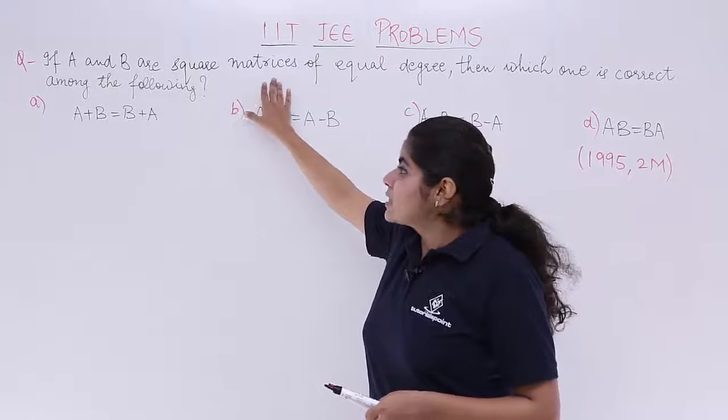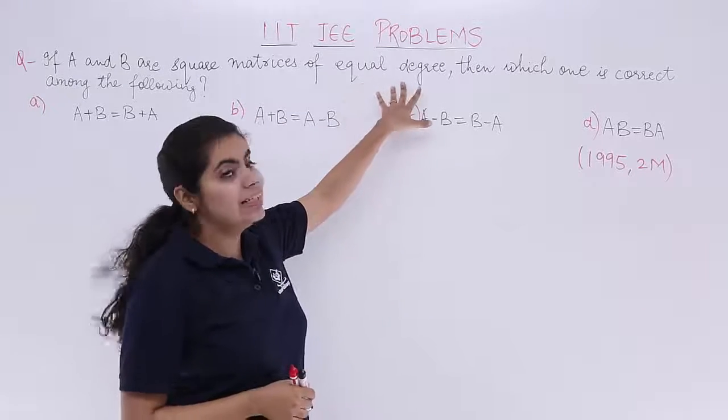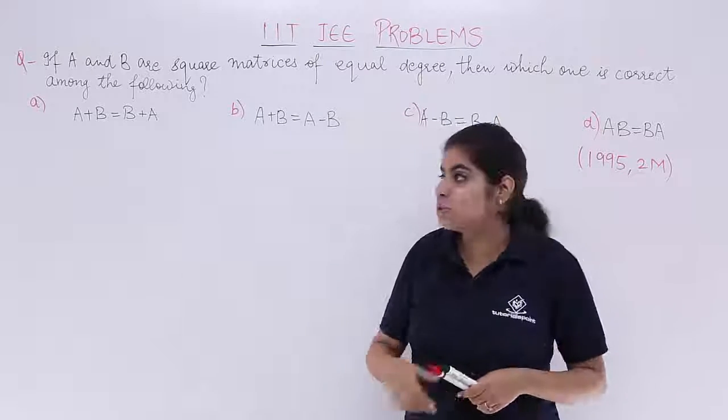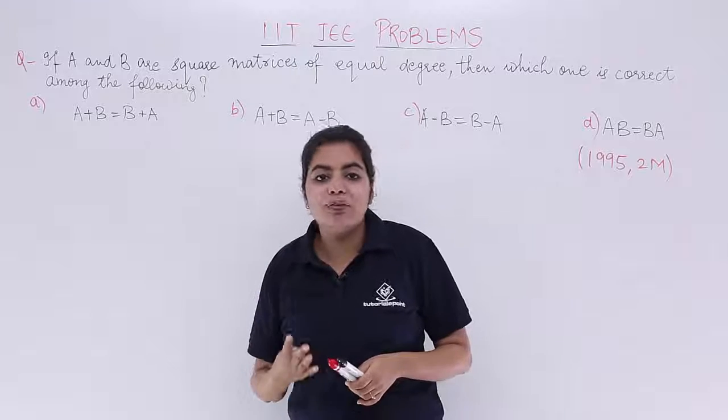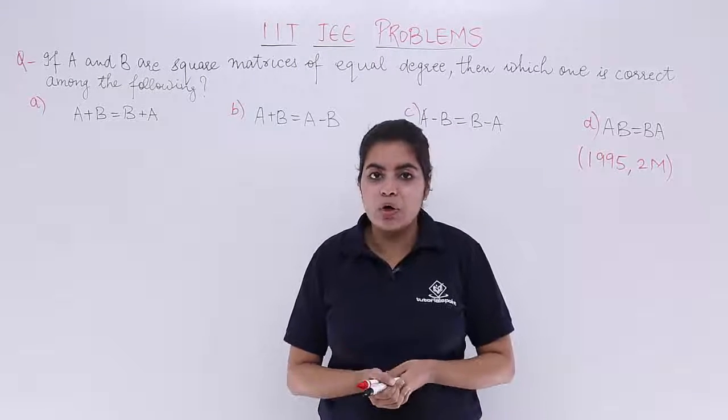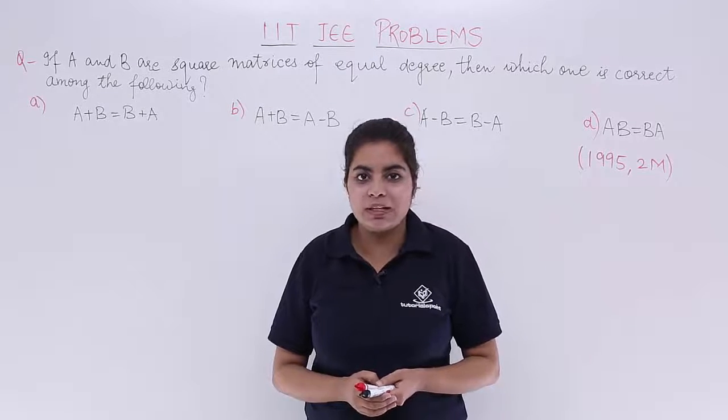If A and B are square matrices of equal degree, then which one is correct among the following? You have four options. You have to tell which one of the options is correct such that A and B are given matrices of equal degree.